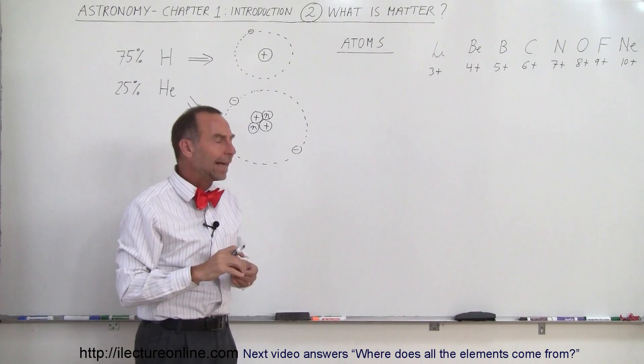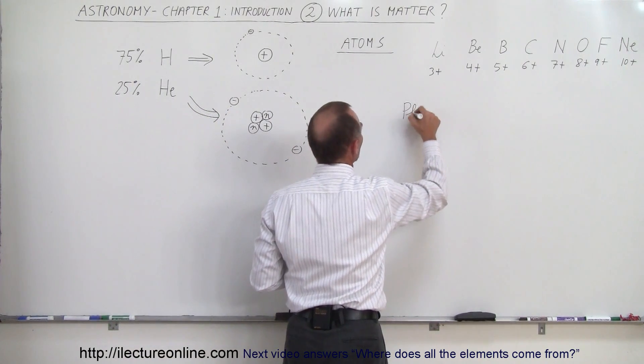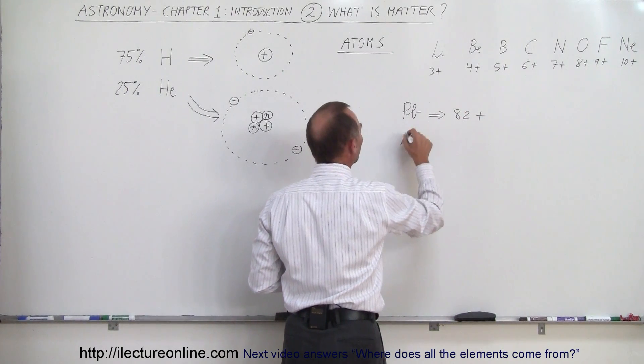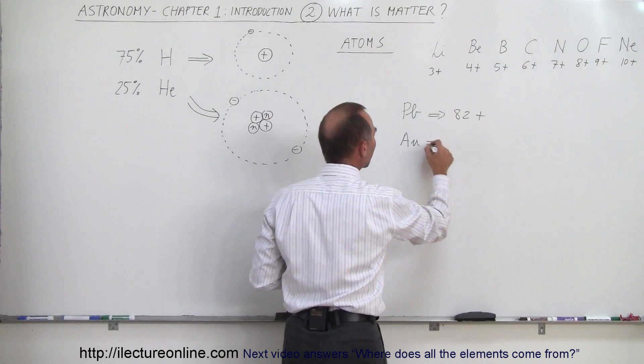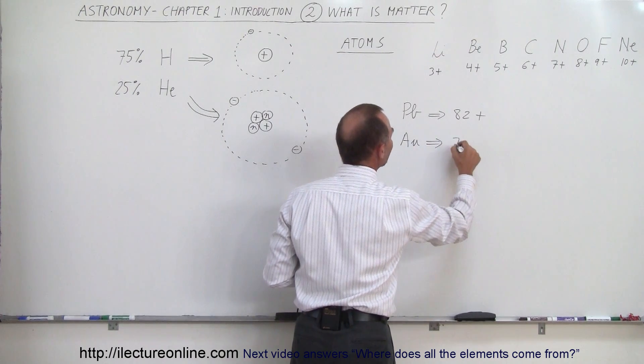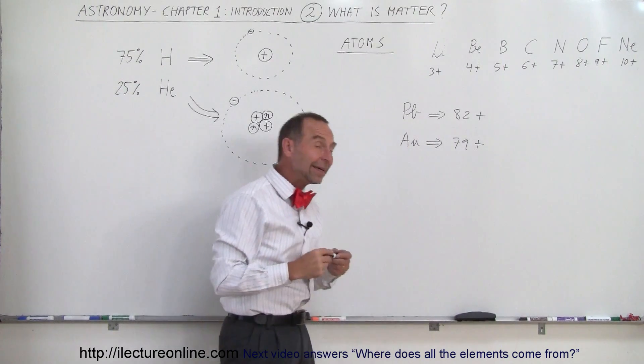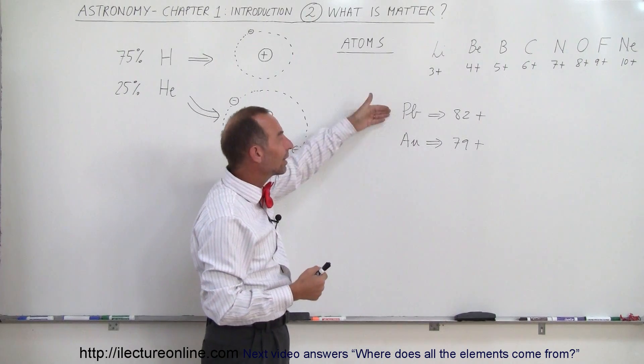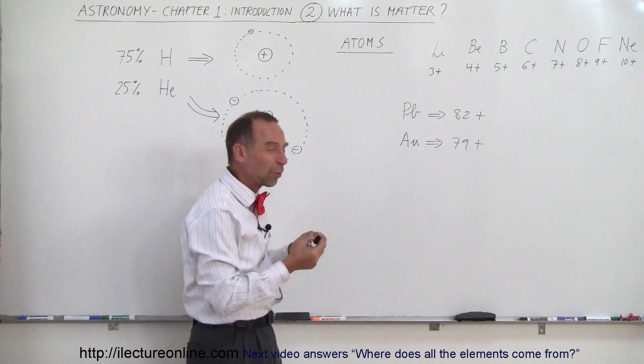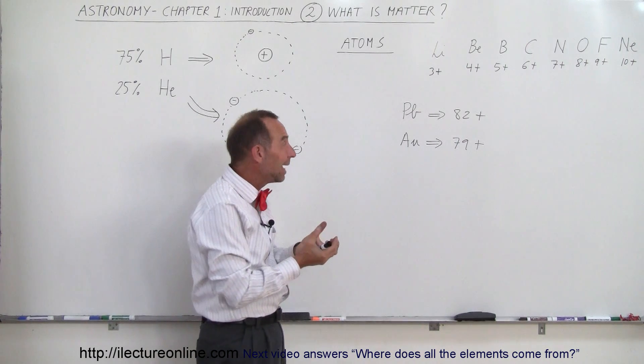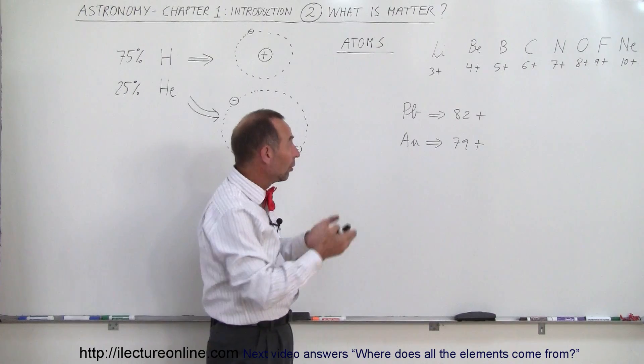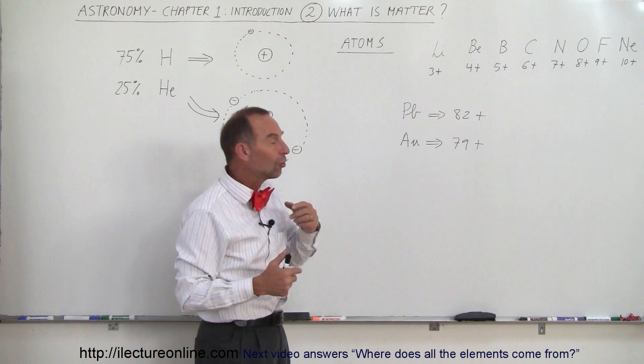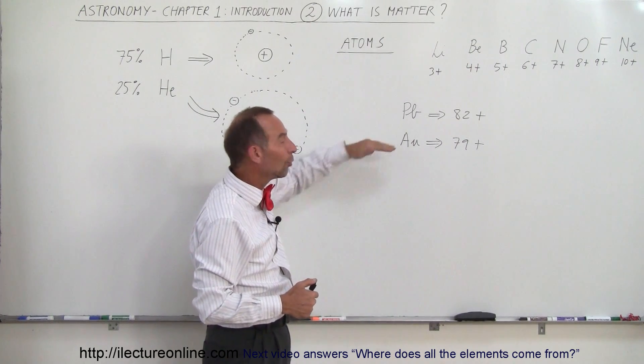For example, lead, which has the chemical form of PB, has 82 protons in the nucleus and gold, which is AU for aurorum, comes from the Latin word aurorum, has 79 protons. And back in the days of the Middle Ages, when people that were called alchemists knew what gold was and knew what lead was, and there was a lot of similarity between those two metals. They were both soft, they were both very heavy, and they thought they could actually turn lead into gold. Imagine if you could turn lead into gold. There was lots of lead around, there wasn't a lot of gold around, and so people for many years tried to turn lead into gold.